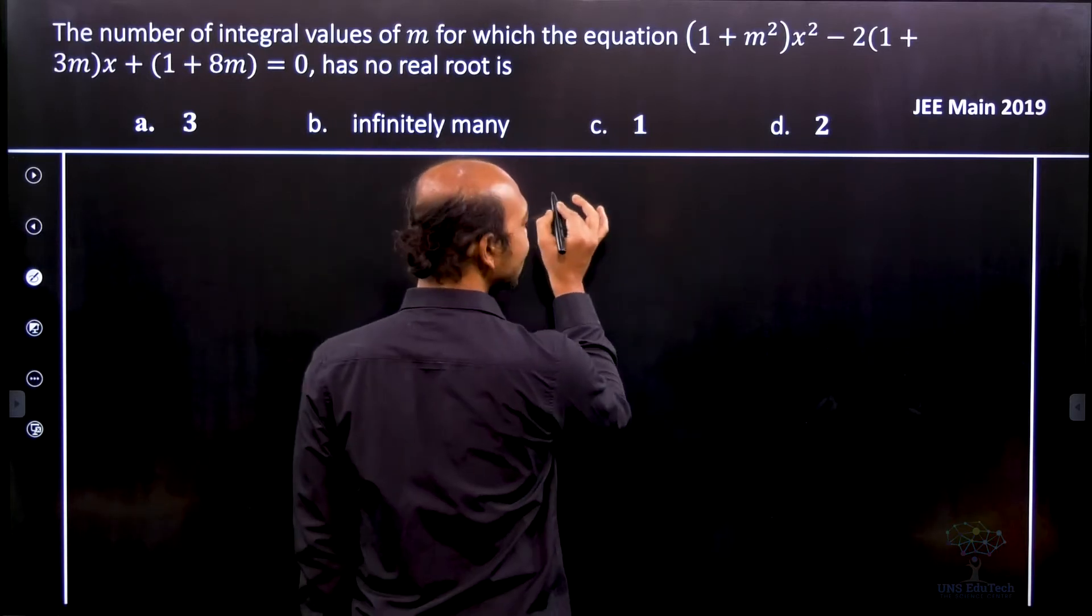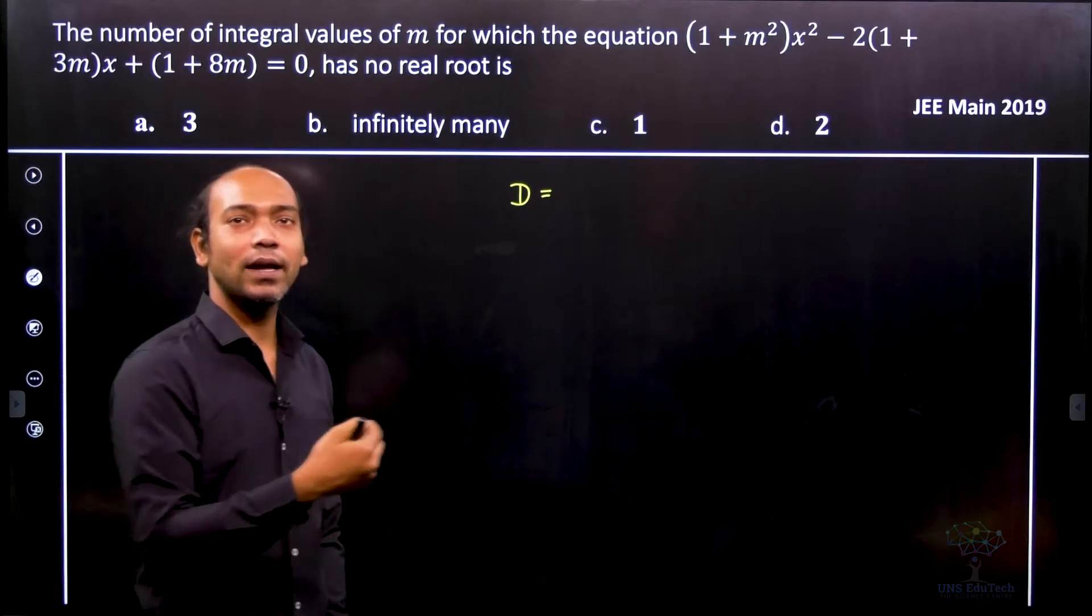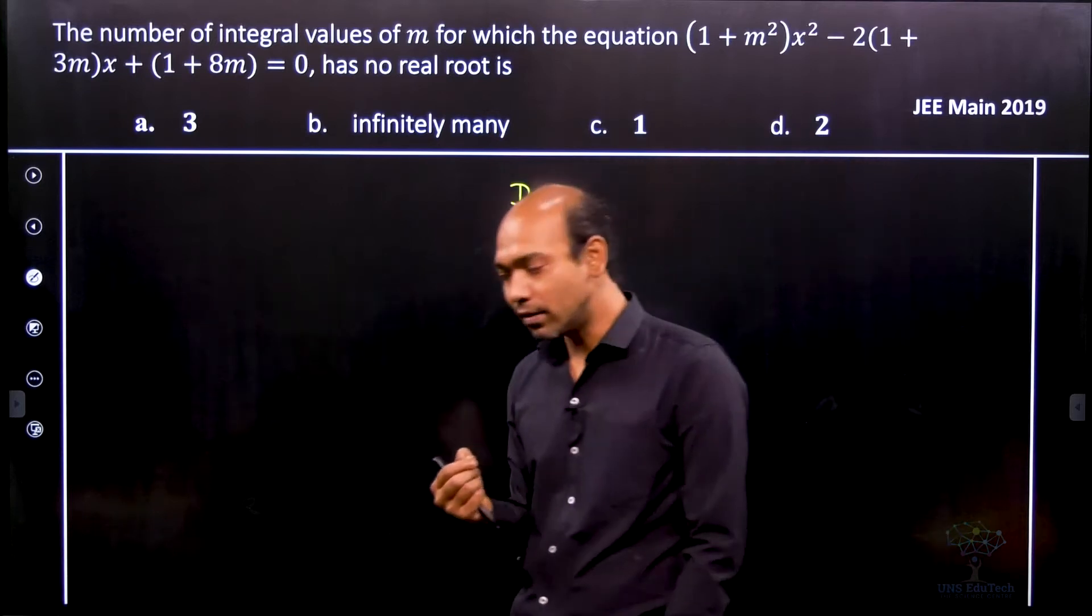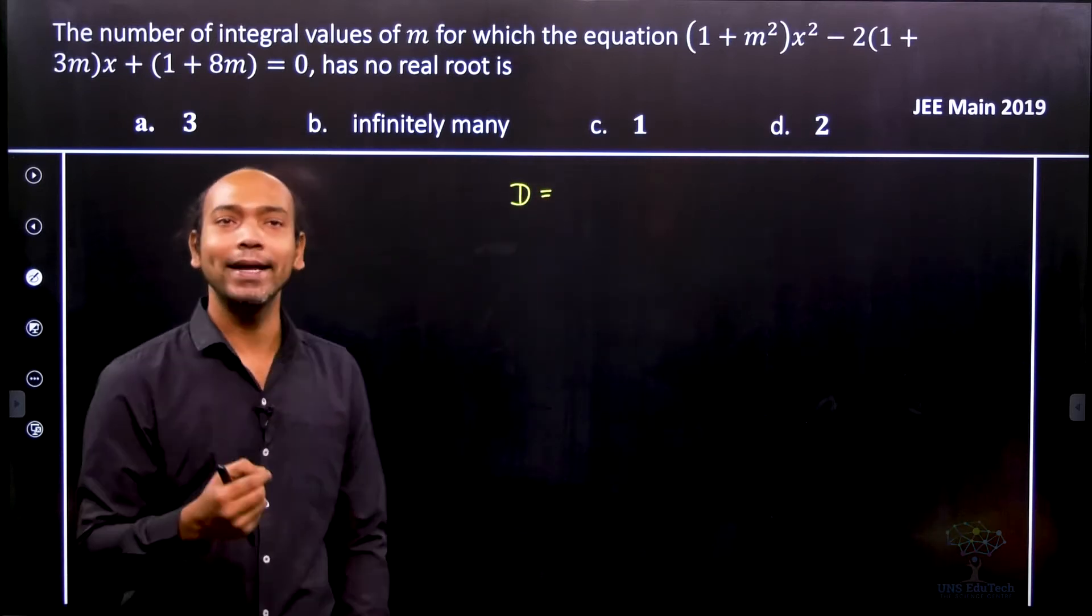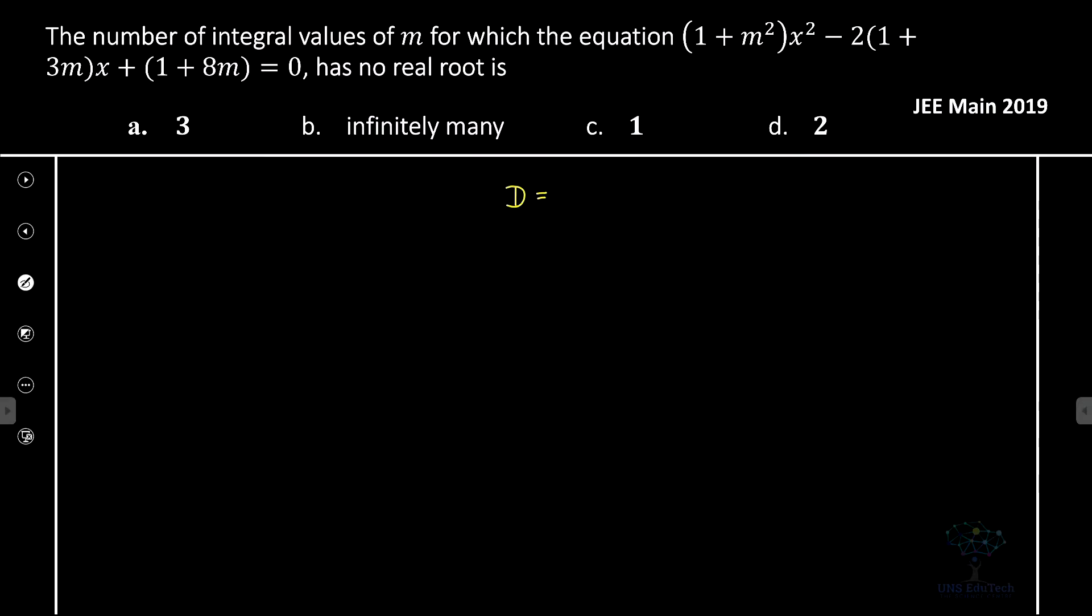So here, if I consider that discriminant D, the discriminant of this given equation will be b² minus 4ac. What is b here? You can see b is equal to minus 2(1 + 3m). So therefore we will say that it is actually 4(1 + 3m)².